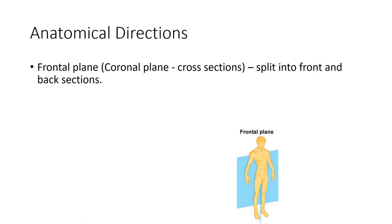Continuing, particularly when looking at portions of the brain, we'll hear about different planes or cross-sections. First, the frontal plane, also called the coronal plane. With this plane, we split the body into front and back sections. If we put a sheet of plexiglass straight down the middle of a person and divided it into a front and back section, this would be a frontal plane slice.